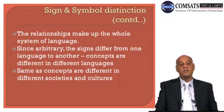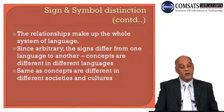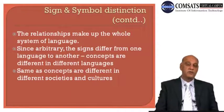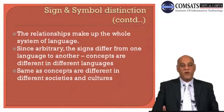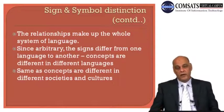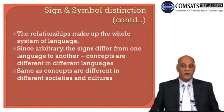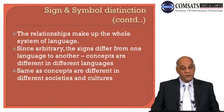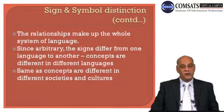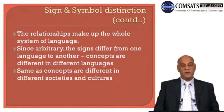Signs are relational entities — they exist only in terms of relation to each other. They enter into complex relationships with each other. When you combine some signs under some rules and relationship, only then you form sentences. The relationships make up the whole system of language. Since signs are arbitrary, they differ from one language to another because the concepts are different.